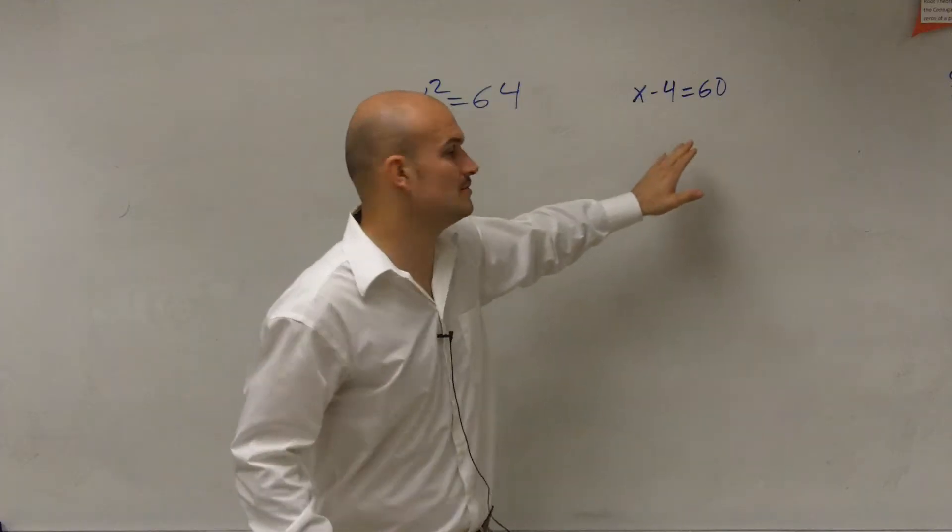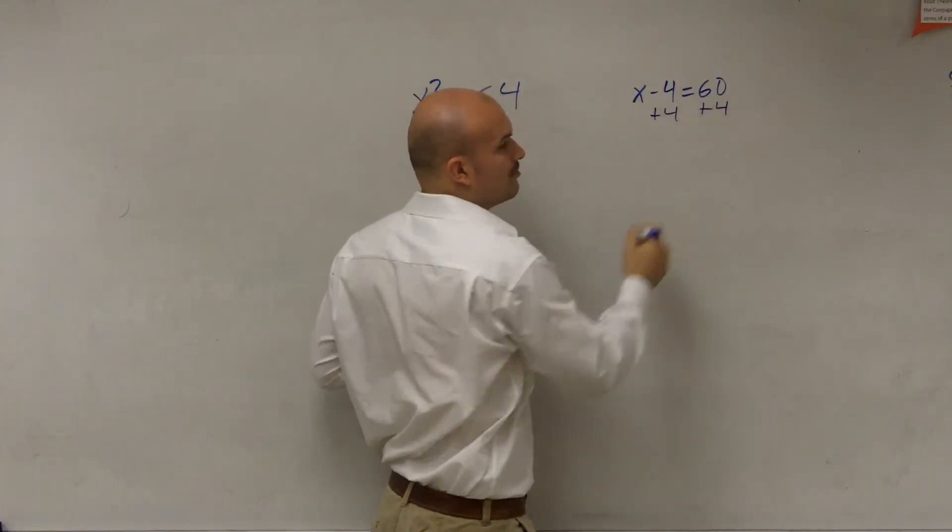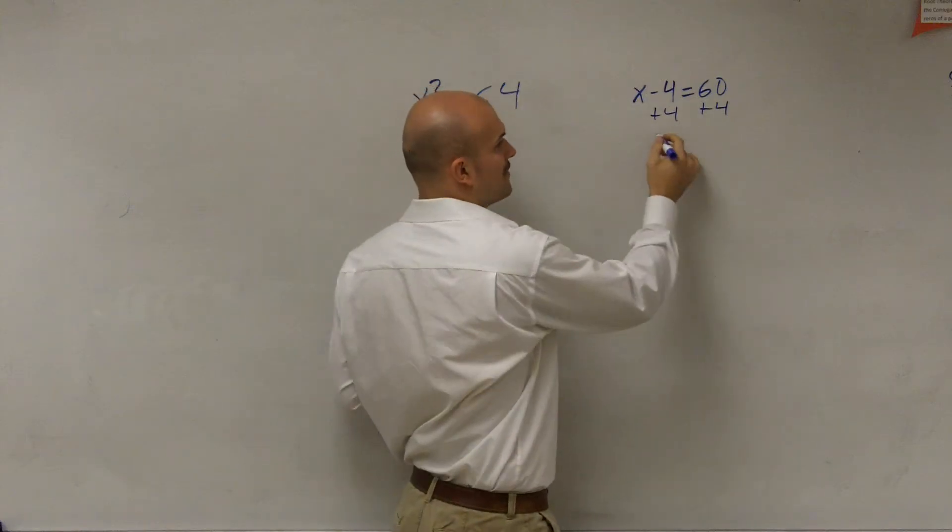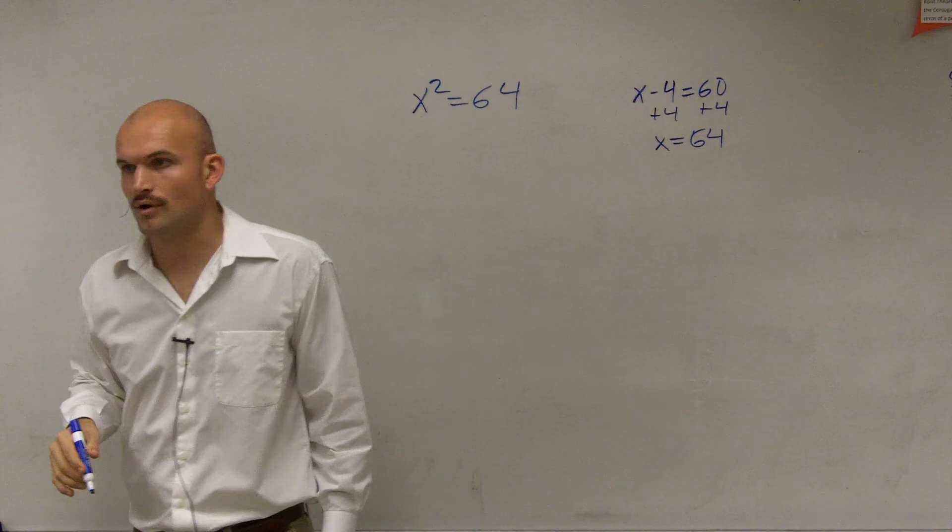So the first thing I could do, Ava, is I could undo subtracting 4 by adding 4 to both sides. So by using addition property of equality, I end up getting an answer of x equals 64, correct?